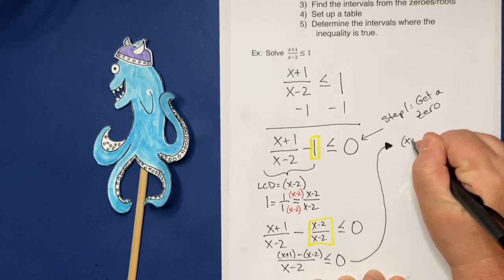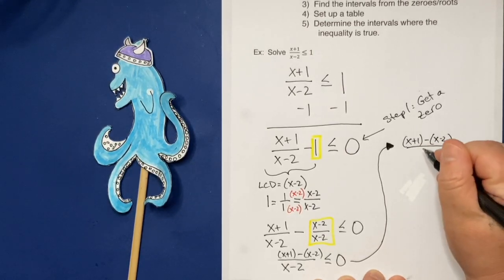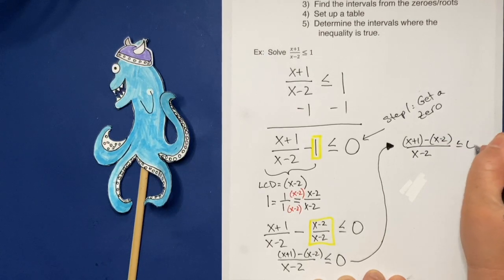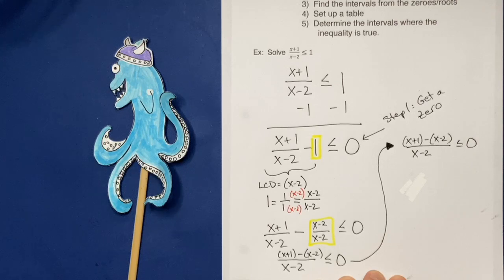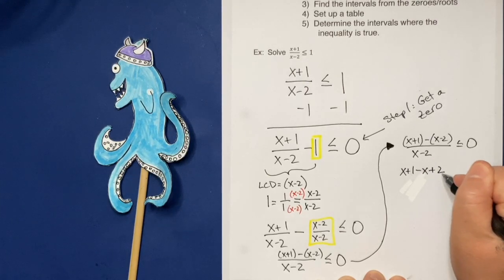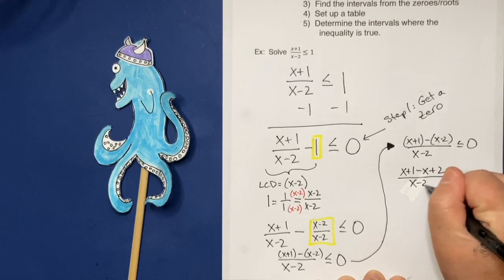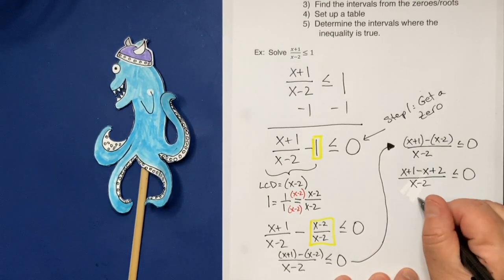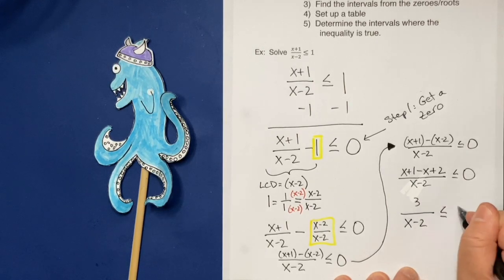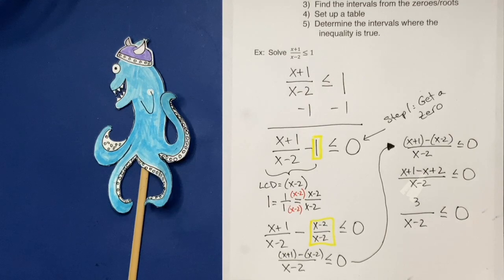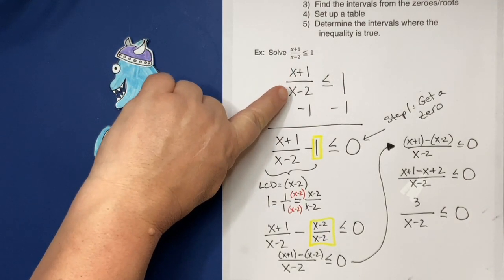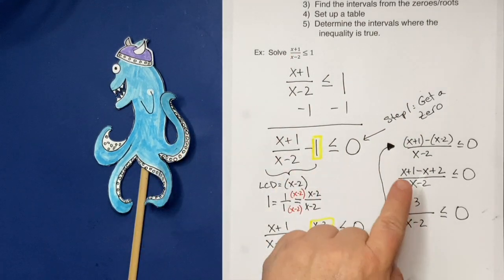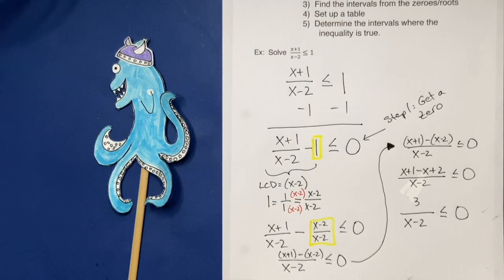So I've got x plus 1 minus x minus 2 all over x minus 2 is less or equal to 0. Now be really careful when you're subtracting because remember that minus has to go all the way through. I get x plus 1 minus x plus 2. Take a look at that. Pause the video if you need to. Make sure you agree with how I got that plus 2. Okay, then I'm going to combine terms. It turns out that I get 3 all over x minus 2 is less than or equal to 0, which is pretty cool. And this is going to be pretty interesting because we started out with 2 x's, but when we moved the 1 over, we actually got just a constant up top, which means this problem's not going to be as hard as some.